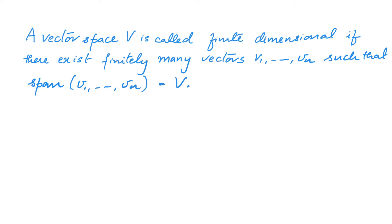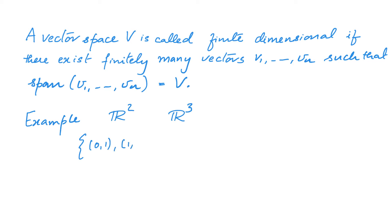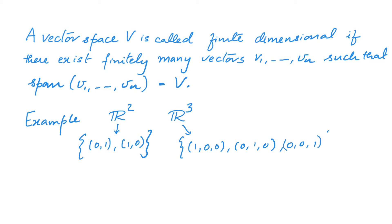Some obvious examples of a finite dimensional vector space would be R2 and R3. We already saw that the set {(0,1), (1,0)} spans R2, so R2 has a collection of two vectors that spans it, and hence R2 is finite dimensional. Similarly, we saw that (1,0,0), (0,1,0), and (0,0,1) span R3, so R3 is also finite dimensional.